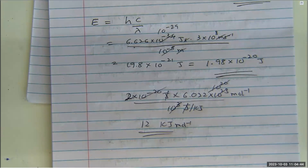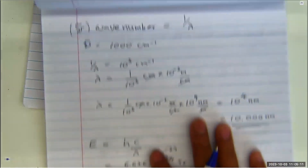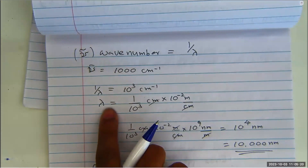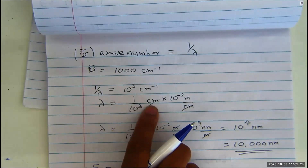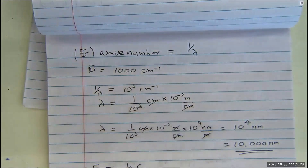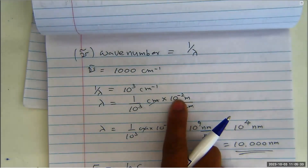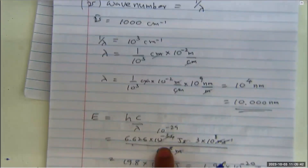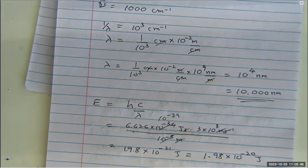This type of calculation — given the wave number, asked to calculate transition energy — is the most complicated version of this equation. The wave number is 1 over wavelength. Whenever you're given the wave number, first convert it to wavelength: 1/λ = 10^3 per centimeter, so λ = 1/10^3 centimeters. Convert to meters by multiplying by 10^-2. Then plug that into the equation and calculate. That's it.